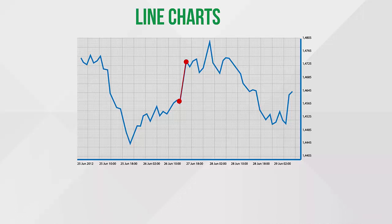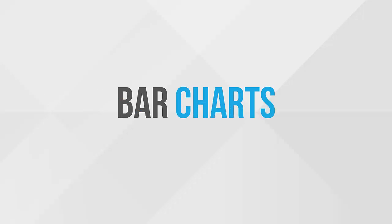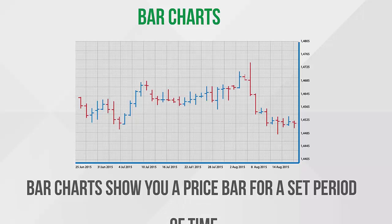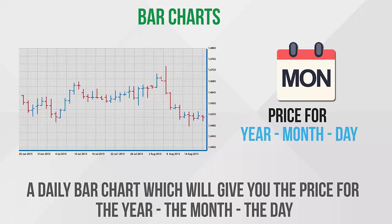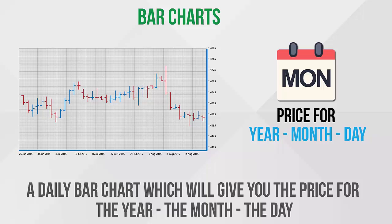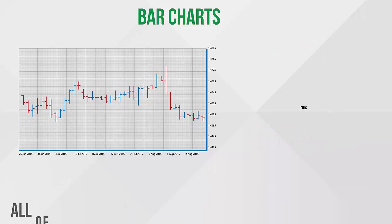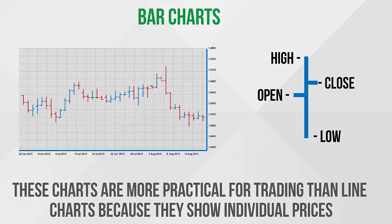Line charts show connections between two points in time. You can analyze a line chart from hour to hour or over a lengthier period of time. Bar charts show your price bar for a set period of time. You can choose a monthly bar chart, a daily bar chart, or a four-hour chart. All of these charts are open-high-low-close bar charts, known as OHLC charts. These charts are more practical for trading than line charts because they show individual prices.